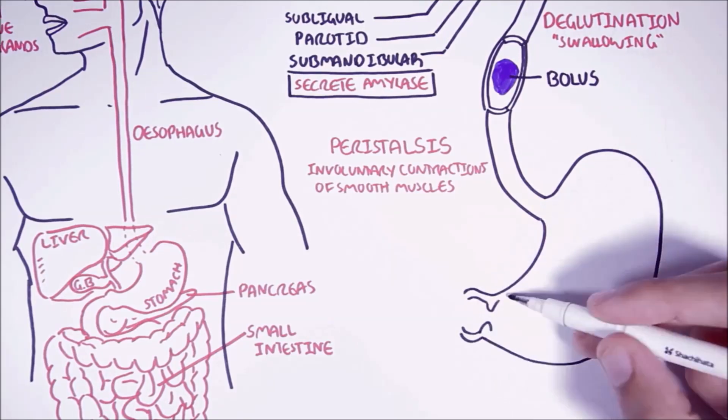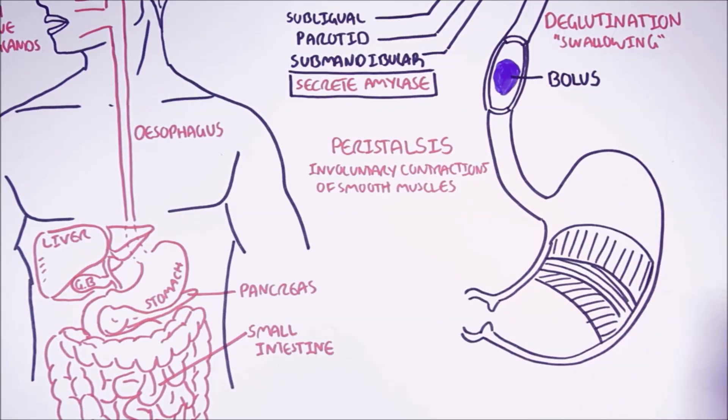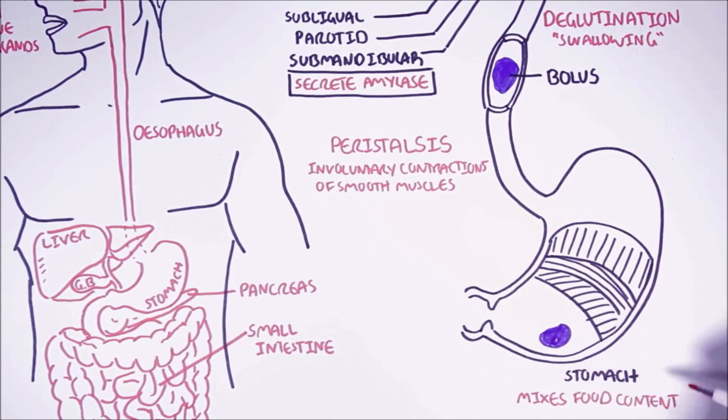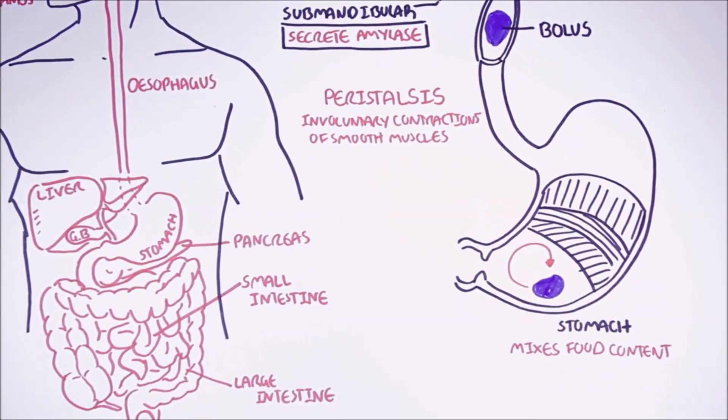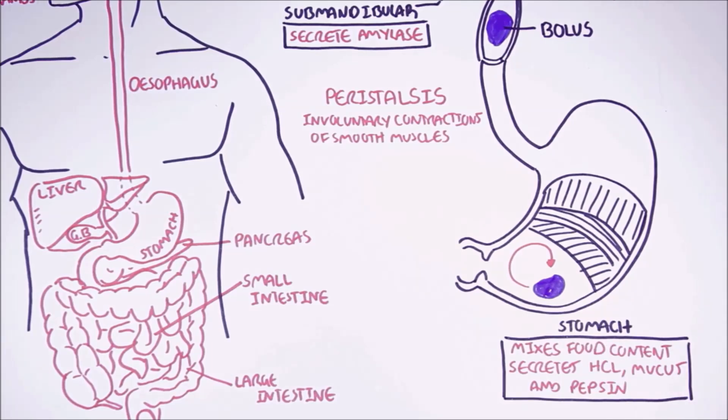The bolus will eventually enter the stomach. The stomach will temporarily store and churn the bolus. The stomach is able to churn the bolus because it has three layers of muscle. The stomach cells also secrete chemicals and enzymes such as hydrochloric acid that helps break down the food, kill bacteria, and stimulate enzyme secretions. The stomach cells also secrete mucus that helps protect the lining of the stomach, as well as pepsin that begins protein digestion.